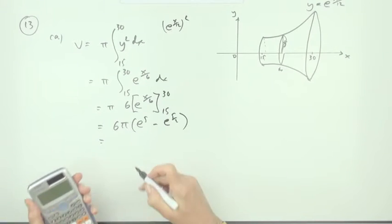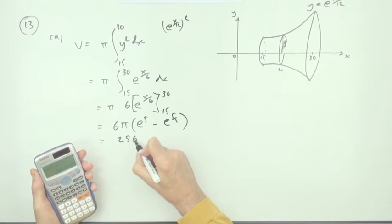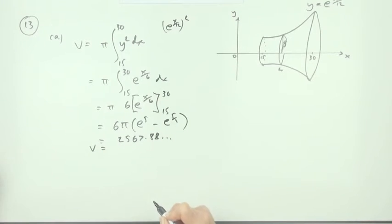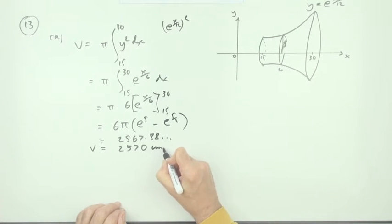That would be it, centimeters cubed, unless you wanted it as a decimal which gives you 2567.88 and so on. If it's to three significant figures, that would be 2570 centimeters cubed.